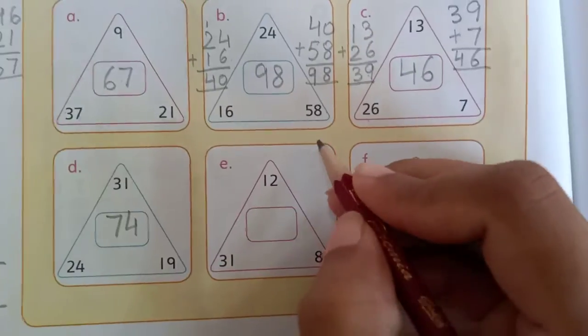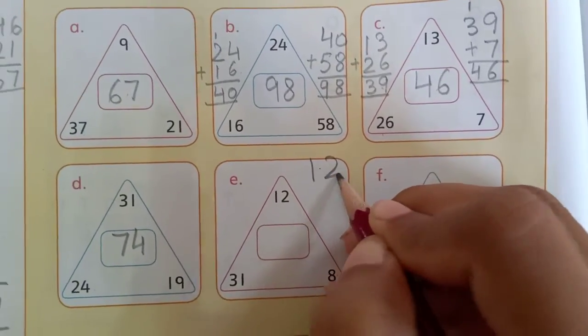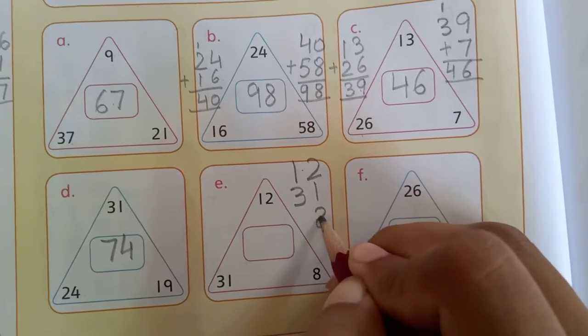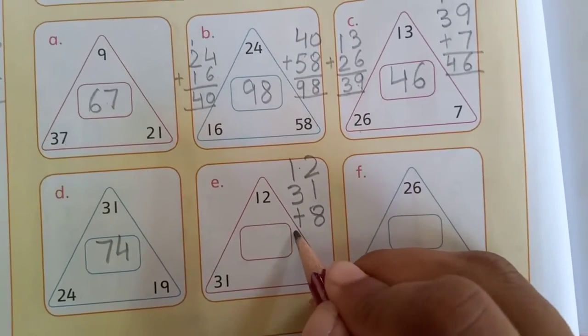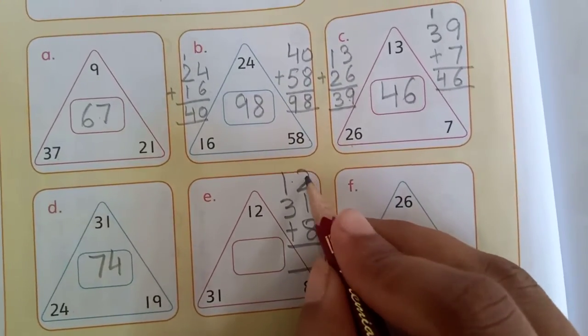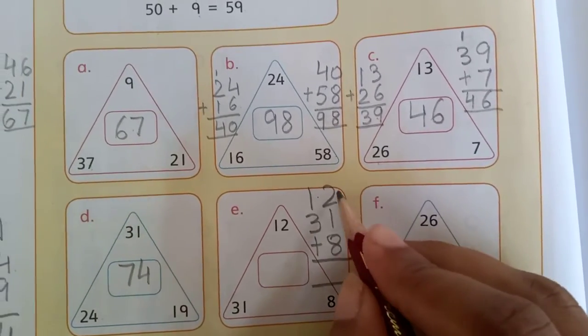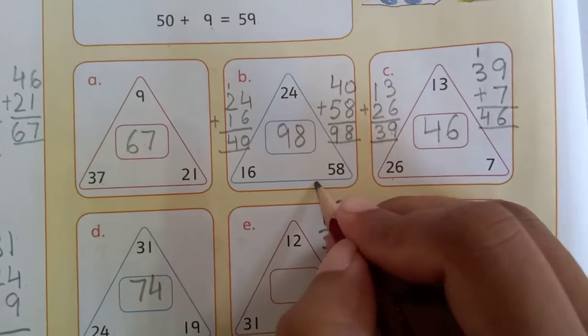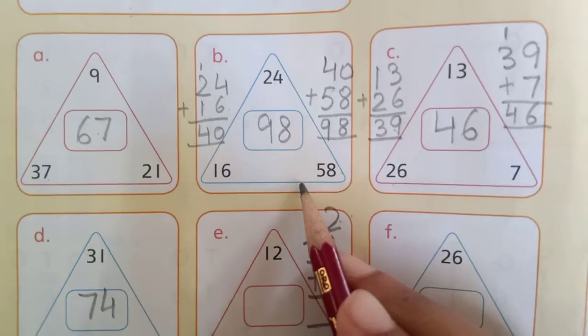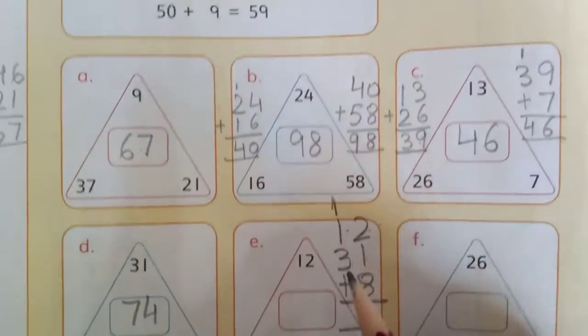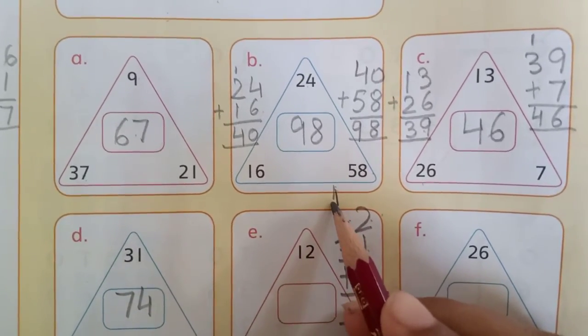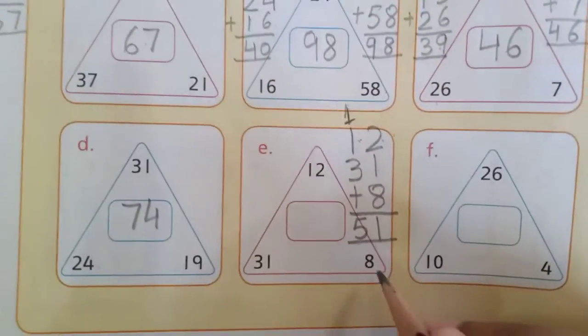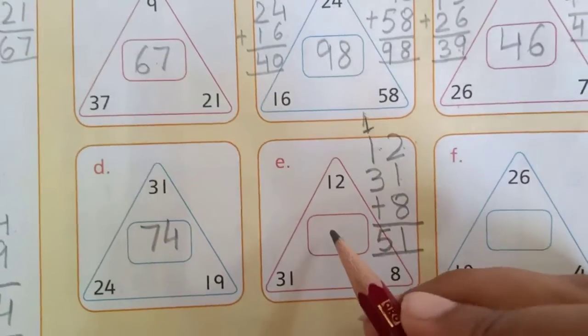For problem E, I will add 3 numbers together. Copy 12, then copy 31, and copy 8. Now you have to add these numbers. 8 plus 2, this is 10, plus 1 is 11. Write 1 here, 1 is carry. 3 plus 1 is 4, and 4 plus 1 is 5. It means the sum of 12, 31, and 8 is 51.